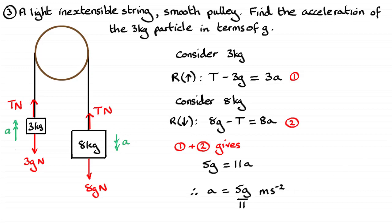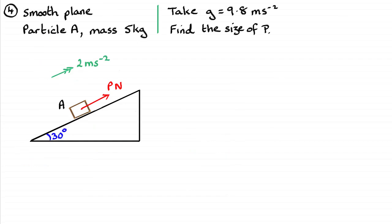Hope you were able to get that — fairly typical pulley question. We're now on to question four, working with inclined planes. We've got a particle A of mass 5 kilograms on a smooth plane at 30 degrees to the horizontal, accelerating up the plane at 2 metres per second squared. Taking g to be 9.8 metres per second squared, find the size of the force P needed to make that particle move up the smooth plane at 2 metres per second squared. Just leave you with that one to try.